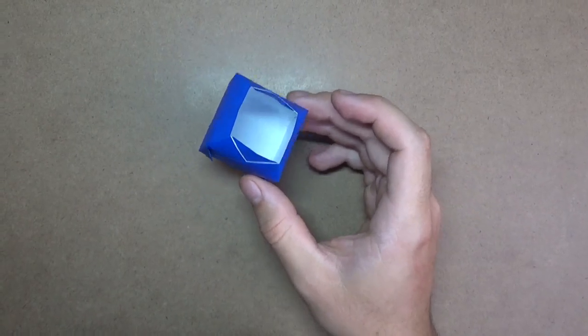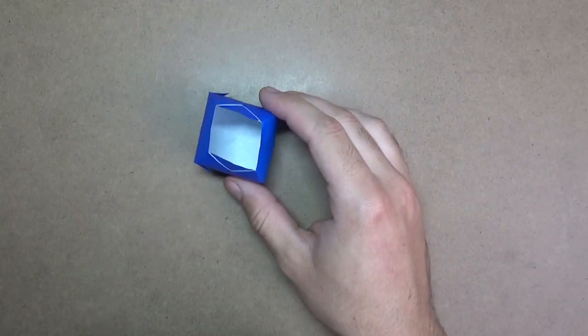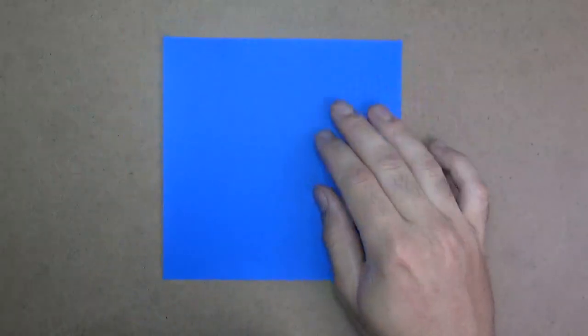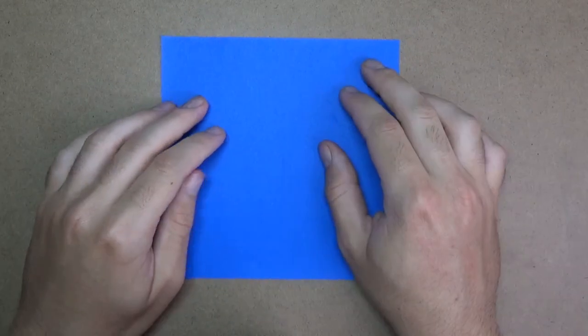And yeah, you can put stuff inside, like flowers or something. And all right, ready, set, here it goes. So for this model, I'm going to use a six inch square of kami paper.